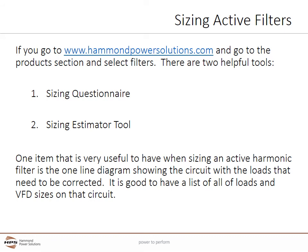Active filters can be sized on Hammond Power Solutions' website at www.hammondpowersolutions.com. Once there, go to the product section and select filters. There are two helpful tools: a sizing questionnaire and a sizing estimator tool. Using the sizing questionnaire, collect the information needed for the size estimator spreadsheet. Once the questionnaire is completed, the information can be entered into the sizing estimator, or it can be sent to Hammond Power Solutions where one of our power quality experts can review and provide a properly sized active harmonic filter solution. One very useful item when sizing an active harmonic filter is a one-line diagram showing the circuit with the loads that need to be corrected, along with a list of all loads and VFD sizes on that circuit.